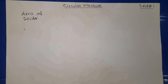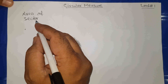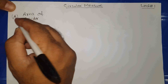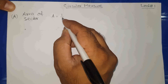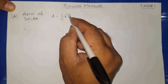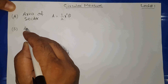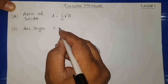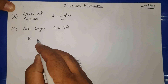Bismillahirrahmanirrahim. Today's lecture number one topic is circular measure. We have two formulas: one for area of sector and one for arc length. We represent area of sector as A, with formula A = (1/2) r² θ. For arc length we use S, with formula S = r θ. An important thing: θ must be in radians.